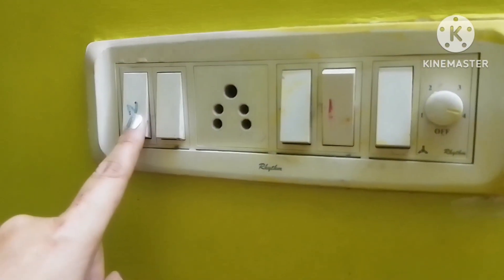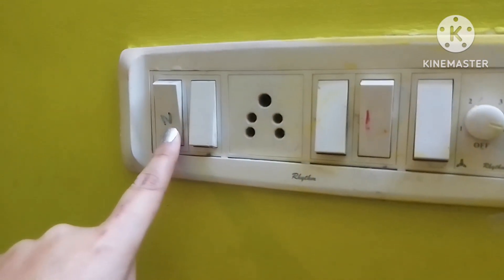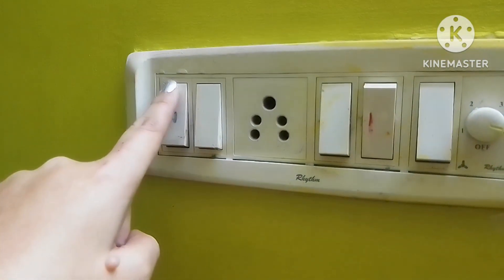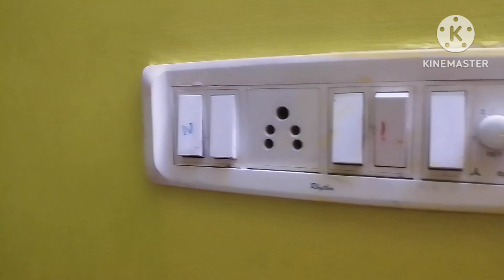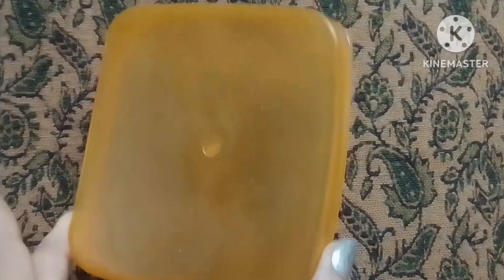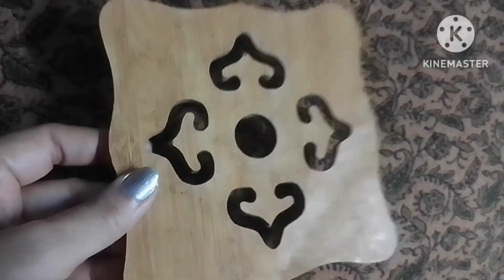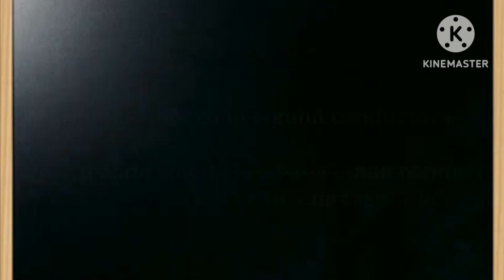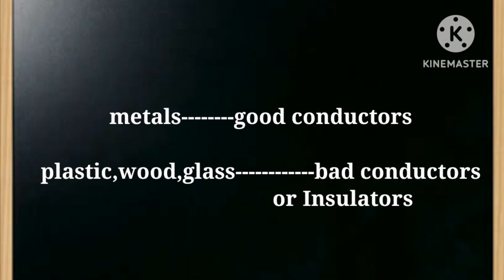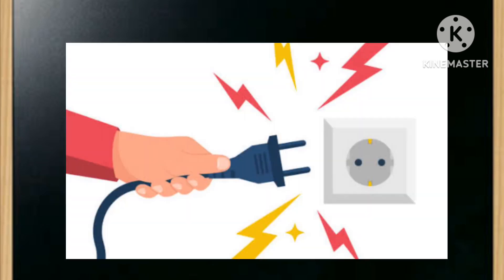Have you ever felt a shivering experience or a little electric shock while touching electrical appliances in your home? But this kind of electric shock you will never feel when you are touching any plastic, wooden, or glass material. This occurs because metal is a good conductor, while plastic, wood, and glass are bad conductors or insulators.